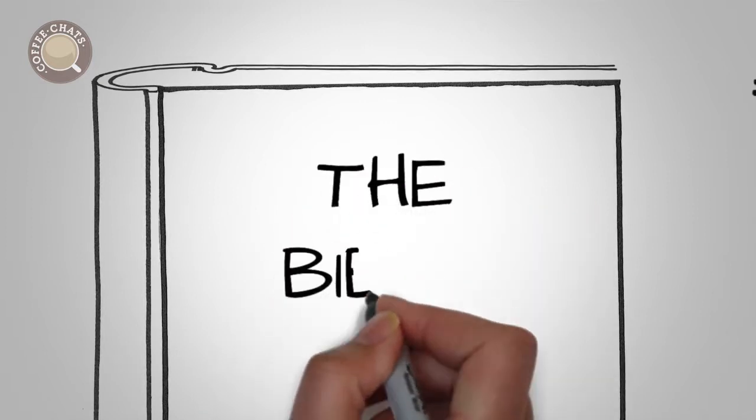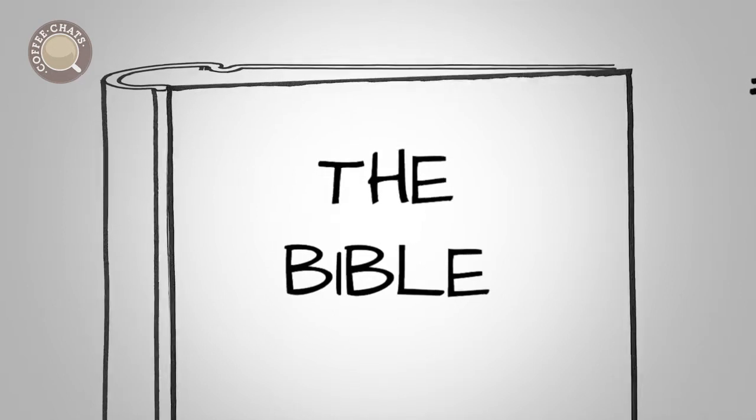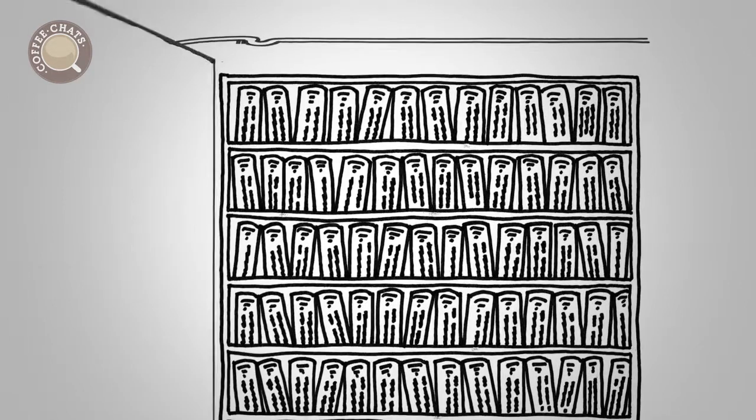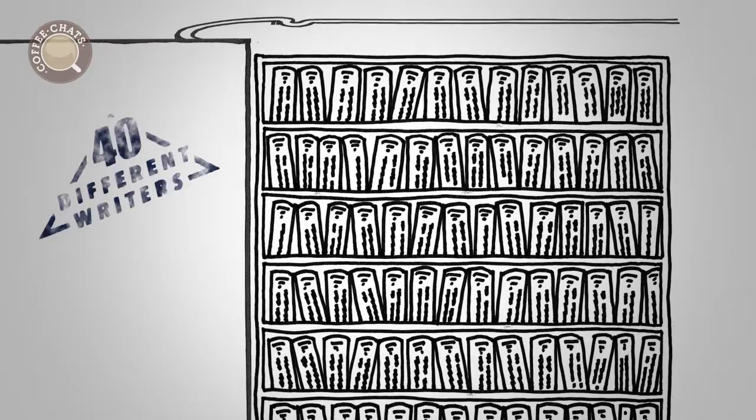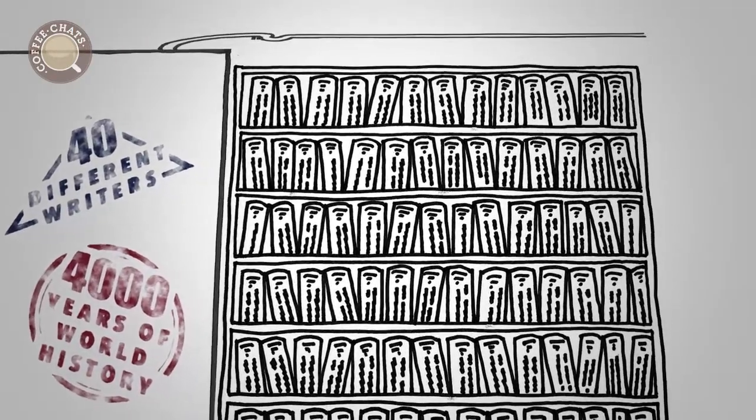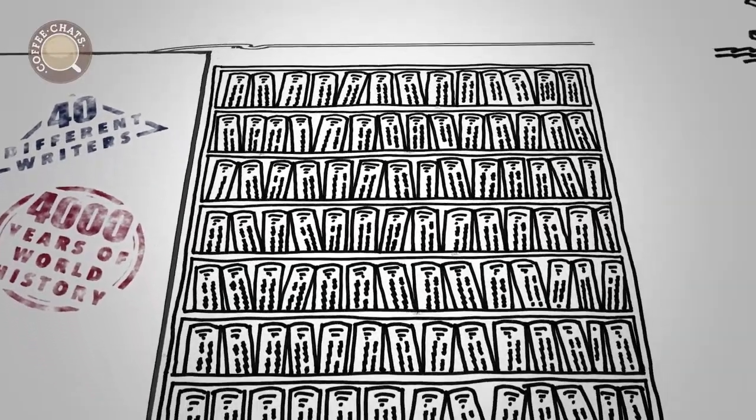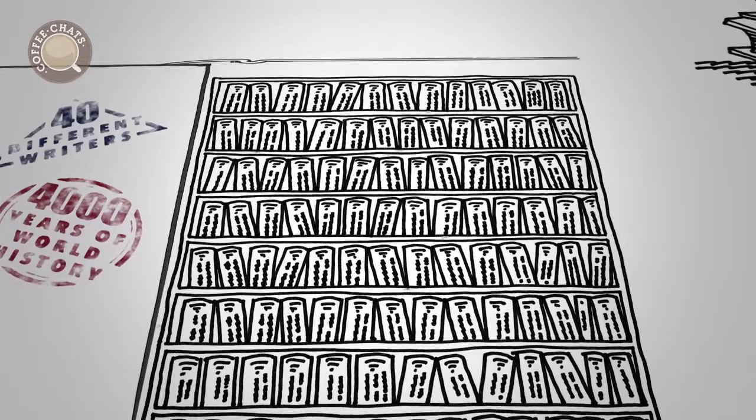Difficult, complicated, and confusing is understandable, because what appears to be a single volume is actually a whole library of books. With 40 different writers covering around 4,000 years of world history, Bible reading can seem a daunting task. Even the titles can terrify the unfamiliar.